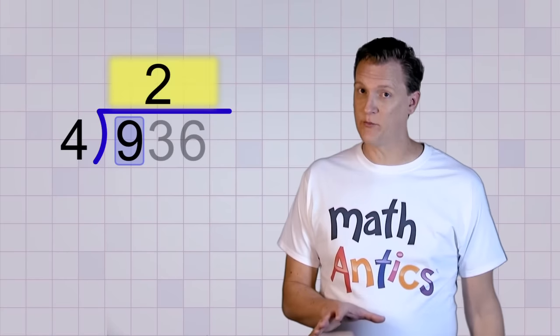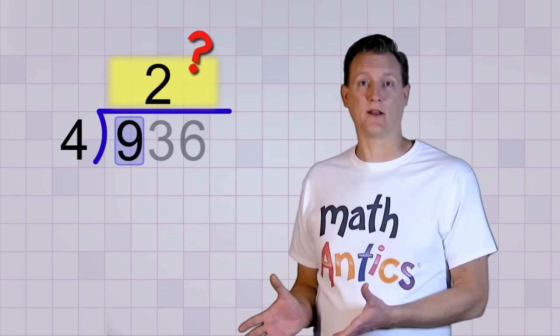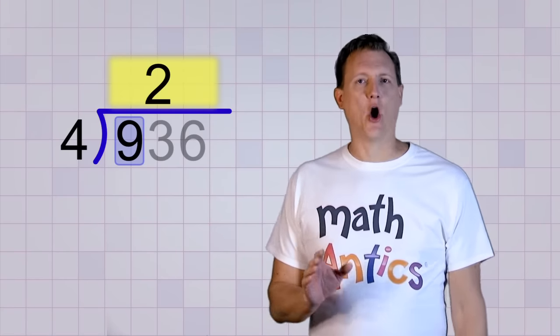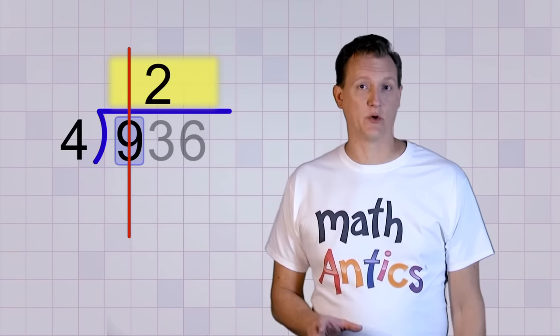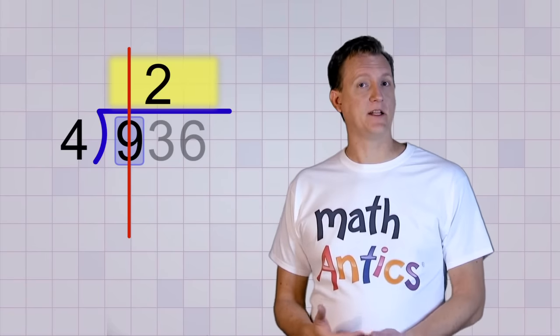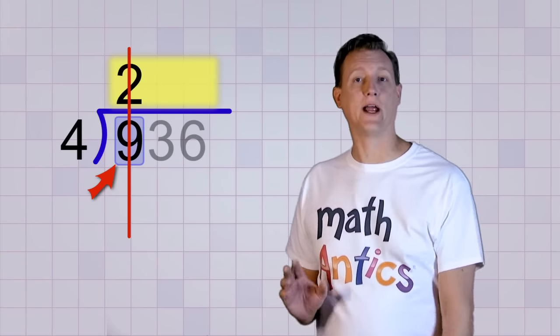So just like before, we put the 2 in our answer spot on top of the line. But wait a minute! There's a lot of room up there. Where exactly do we put it? Well, the answer digit should always go directly above the digit we're dividing. Since we're dividing the digit 9, our 2 should go right above the 9.